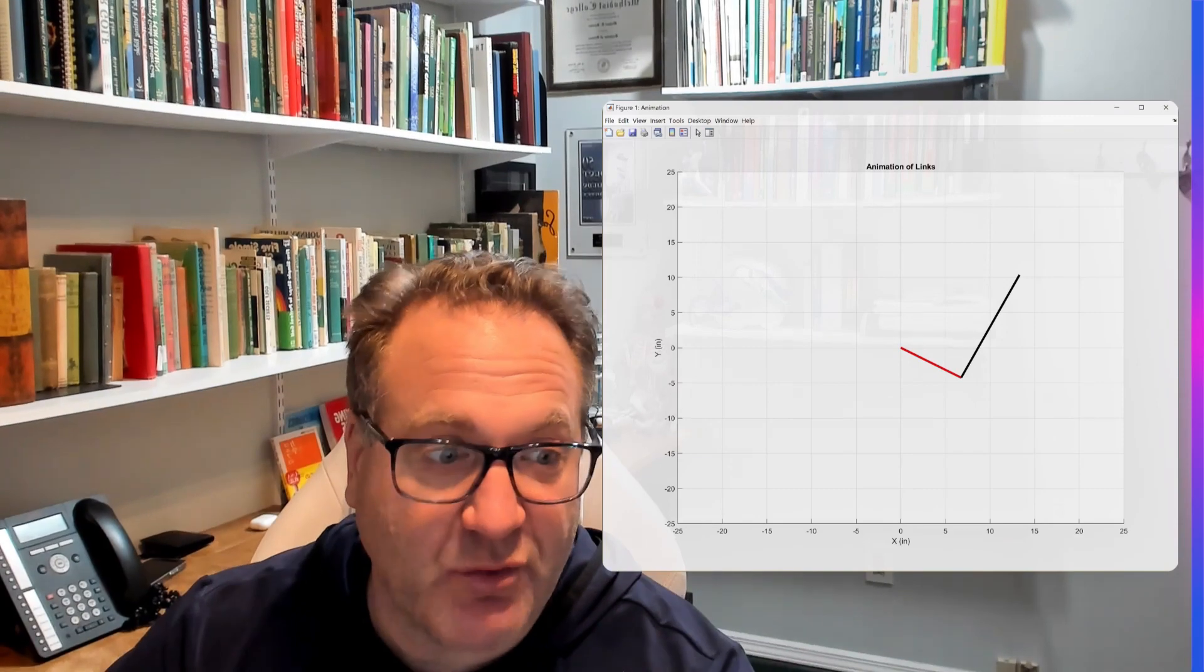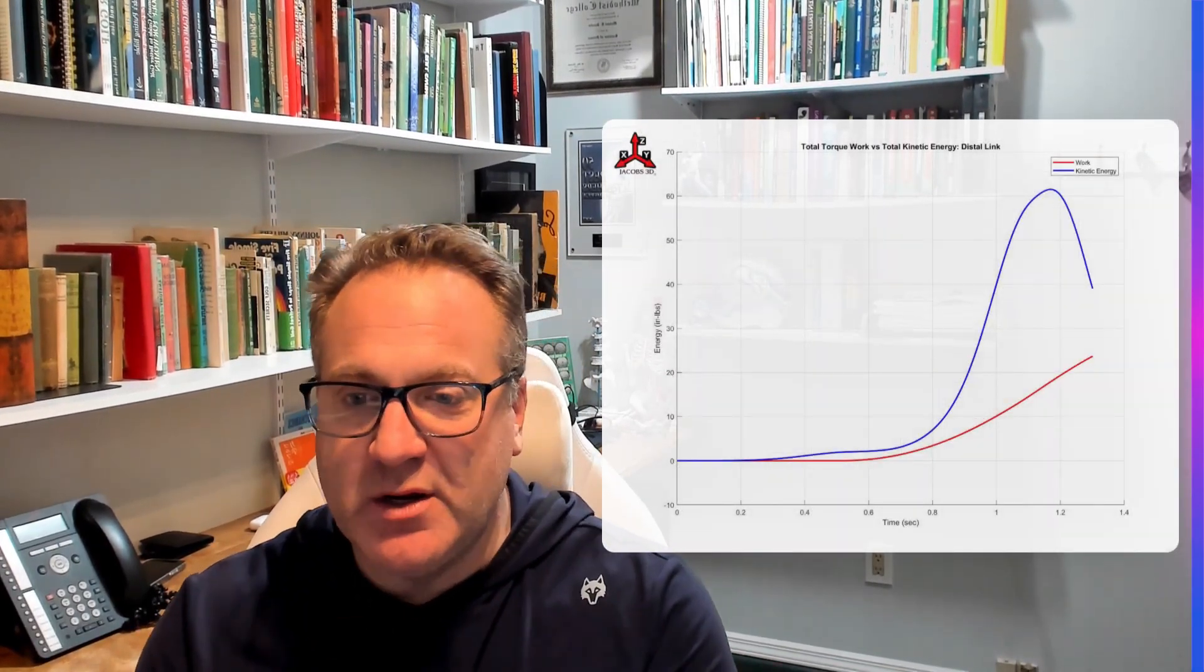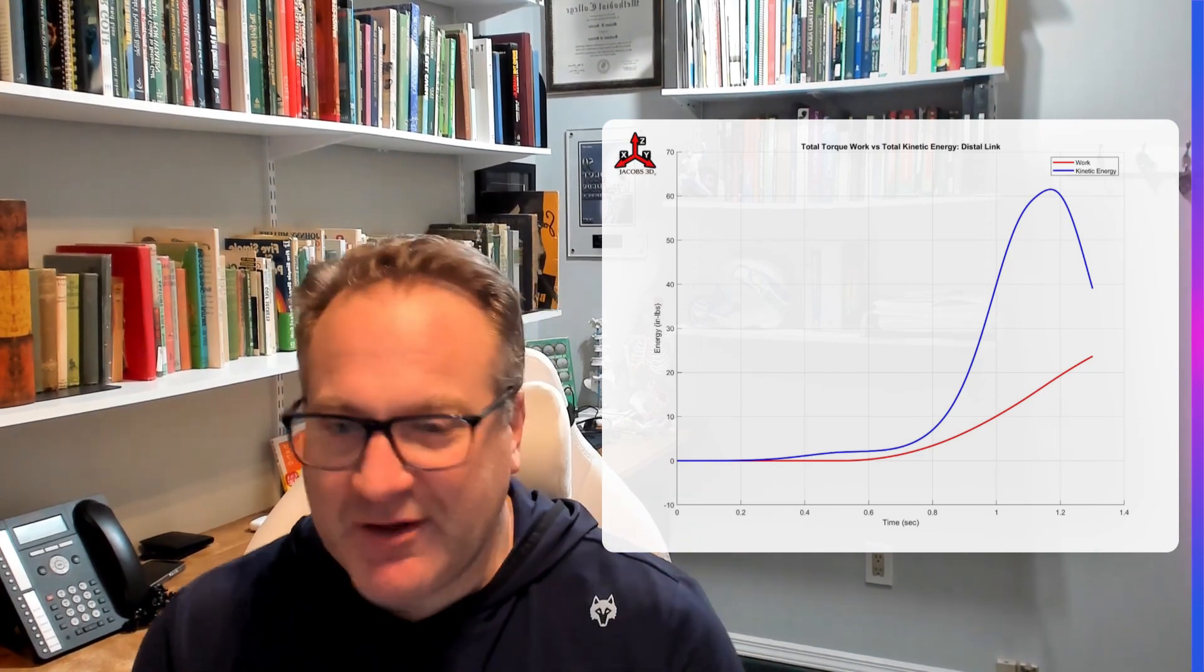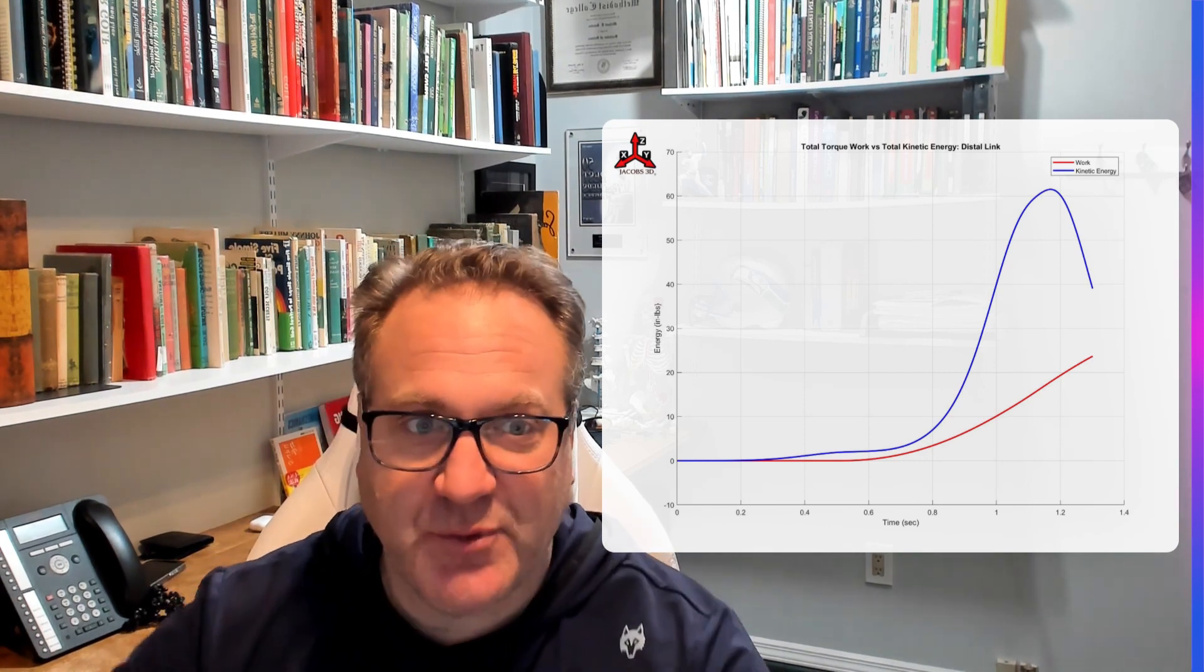So now what you're looking at is the total torque and work in the distal link, so of the club. And this will give you an idea of a great way to see how the golf swing works.